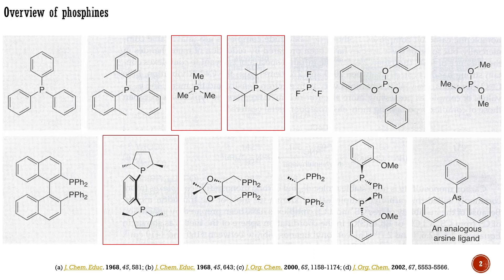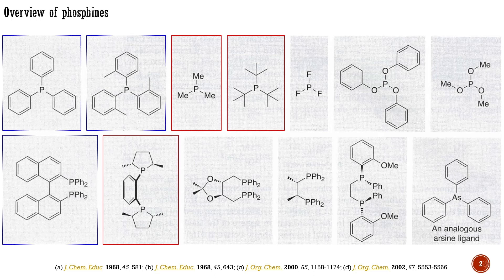Phosphines are more susceptible to oxidation than amines because phosphorus in the plus-5 oxidation state is stable. Many alkylphosphines are air-sensitive and even pyrophoric. Considerably less electron-rich arylphosphines and phosphites are less sensitive or indefinitely stable to air. Additionally, more sterically hindered alkylphosphines are less air-sensitive than less hindered alkylphosphines.